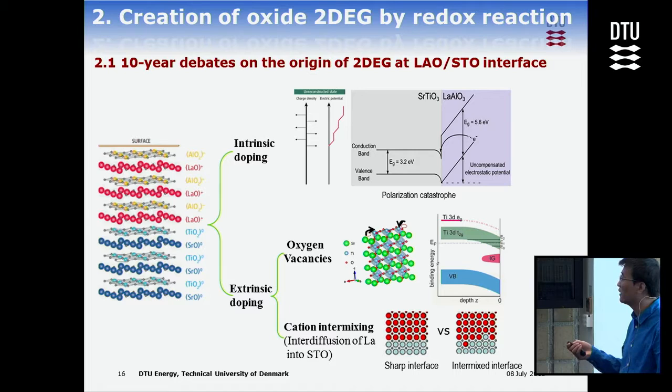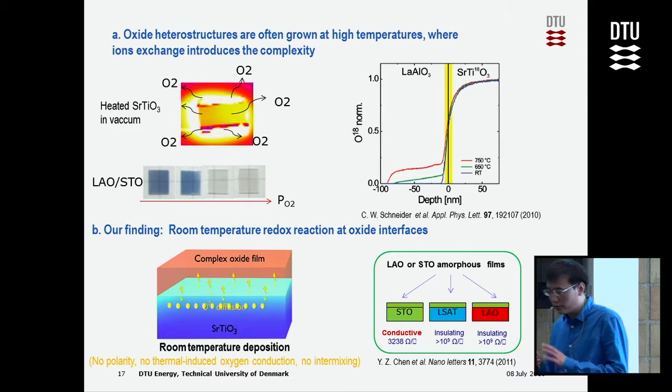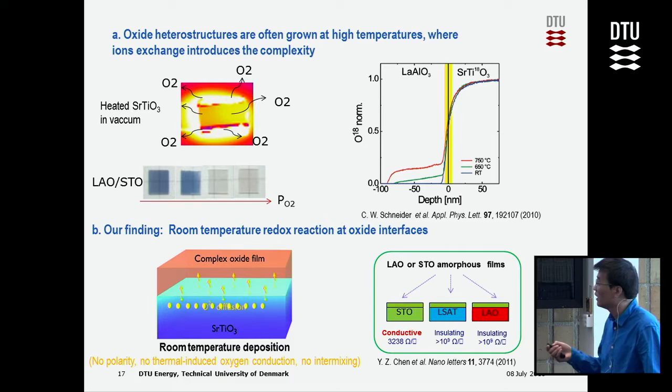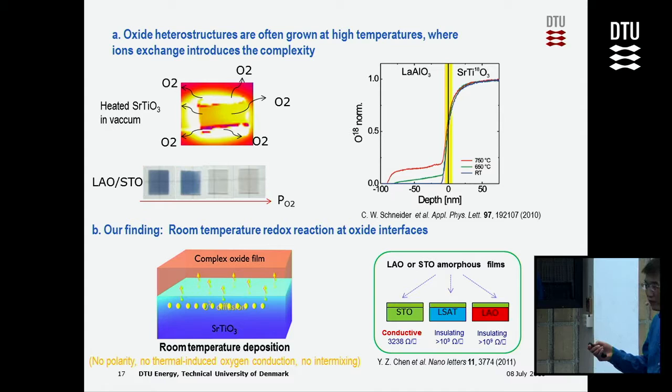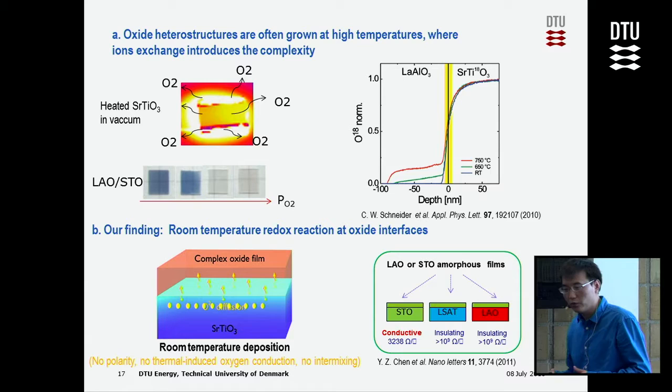People criticize this as too high — before electrons can transfer, defects like oxygen vacancies or intermixing may already form at the interface. All of these can give conduction. Also, since these structures are made at high temperature, the material can lose oxygen to the environment. Basically, we think we cannot reach agreement in the field if we always grow films at high temperatures.